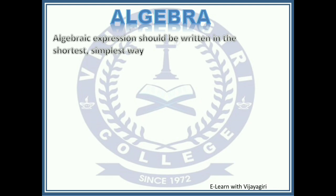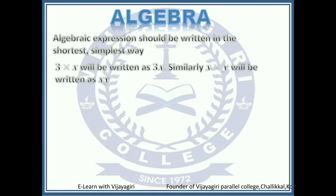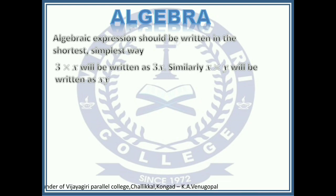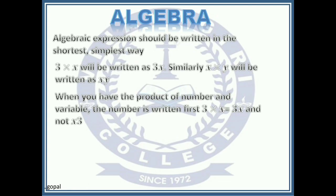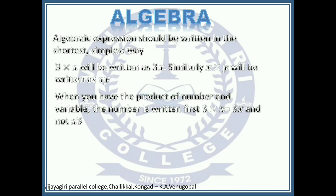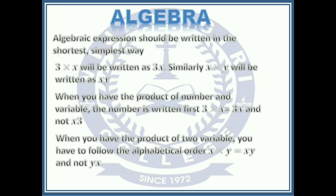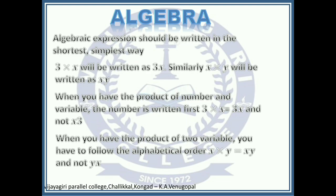Algebraic expressions should be written in the shortest and simplest way. For example, 3 times x is written as 3x, and x times y is written as xy — we do not use the multiplication sign in the simplest form. When you have the product of a number and a variable, the number is written first: 3 times x is written as 3x, not x3. When you have a product of two variables, follow alphabetical order: x times y is xy, not yx. So b times a is written as ab.